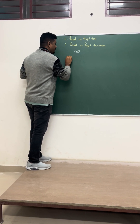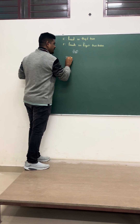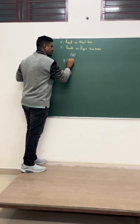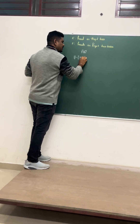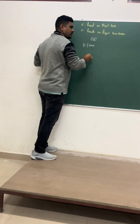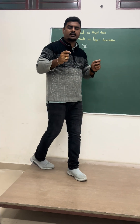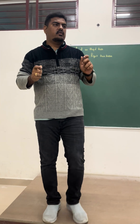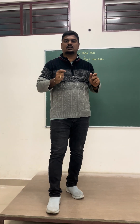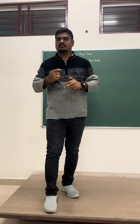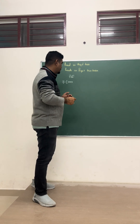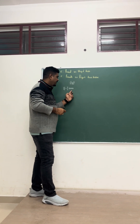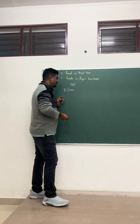When you toss 3 times, the sample space is all possible outcomes. The first possibility: first time head, head, head.